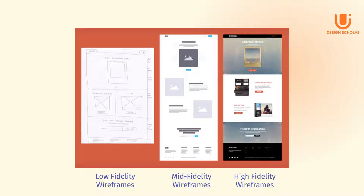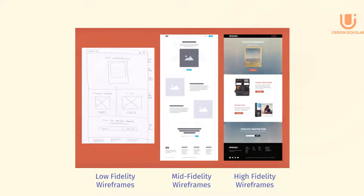In a low fidelity wireframe, you can see that it is a rough sketch. In a mid fidelity wireframe, we have added some details, and in high fidelity wireframes, we have added the actual content, like images and written content.